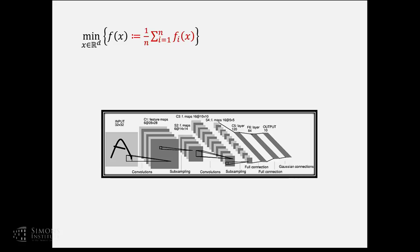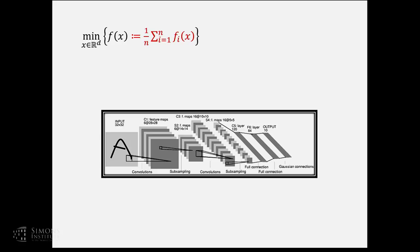N here corresponds to the number of input training data. For instance, if we're doing a convolutional neural network with a million images to train, then each fi could correspond to the loss value with respect to the i-th input training image, and n could be a million. Some people also write it as an expectation over functions fi, which allows the index i to be drawn from an infinite set.